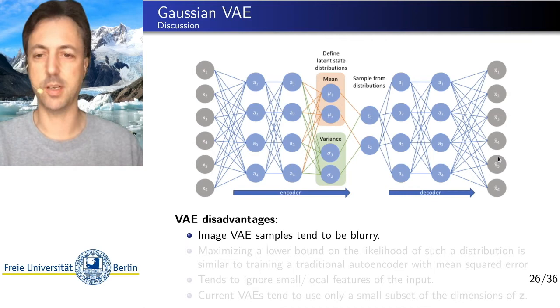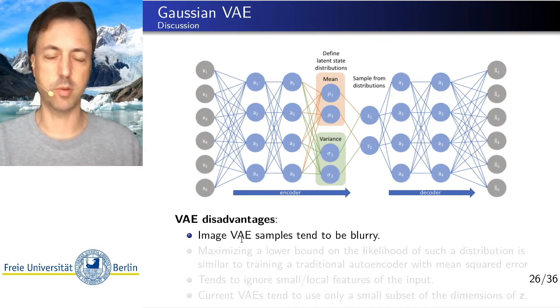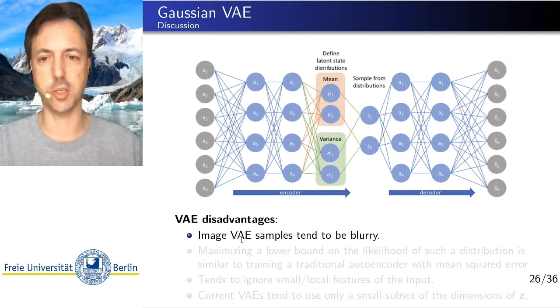On the minus side, the disadvantage side, it's that image variational autoencoders that are sampling images tend to generate somewhat blurry images. This is a result from the different approximations made here. The variational approximation and the approximation of the computation of the output probability we have discussed before.